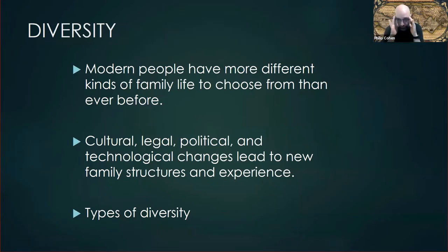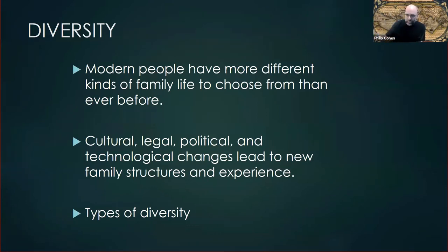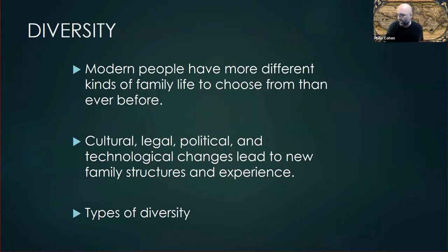Diversity, inequality, and social change. The framework takes diversity as an array of choices and options and differences — some voluntary, some not — it's the proliferation of difference when it comes to family life. We've concentrated on four types of things in the social environment that facilitate a wider array of family structures: cultural, legal, political, and technological. A nice feature for students is talking about different types of diversity — race and ethnicity first, probably then gender, then family structure, trajectories through family life, and the interaction of the different kinds of diversities. It's a recurring theme.